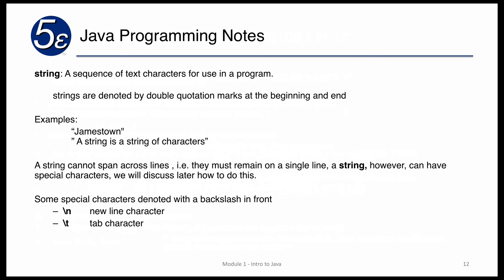A string is a sequence of text characters used in a program — it might be a place name like Jamestown, or a sequence of characters forming a sentence that you'll output or use later. When writing strings in Java, a string must not span across lines; it must be on the same line, opened with a double quote and closed with a double quote. If you wish to include carriage returns or other special characters, there are ways to do that, and a list of special characters will be provided.